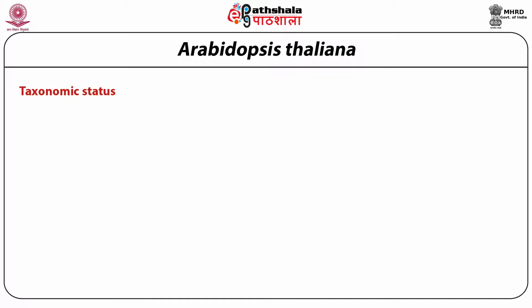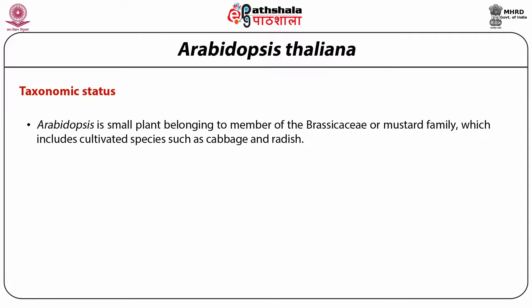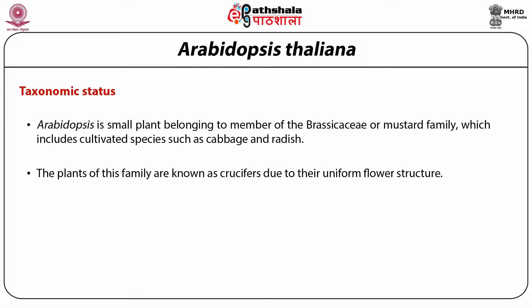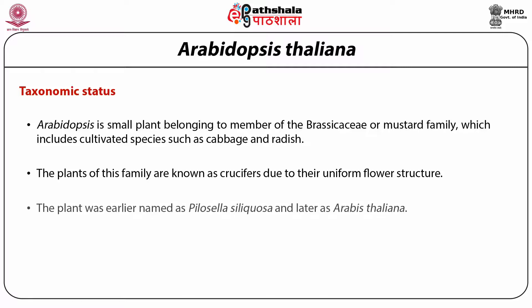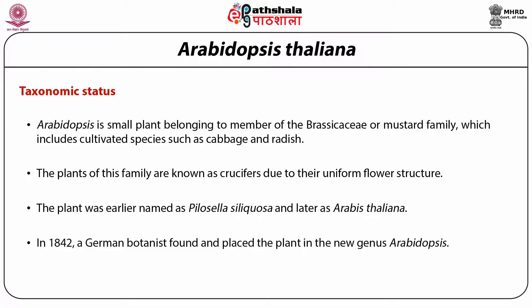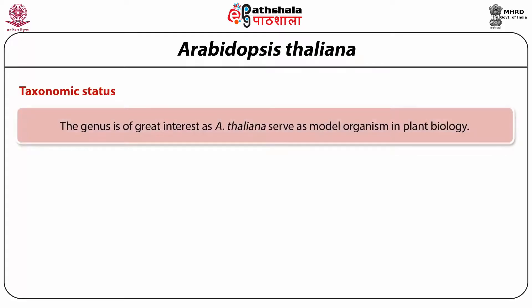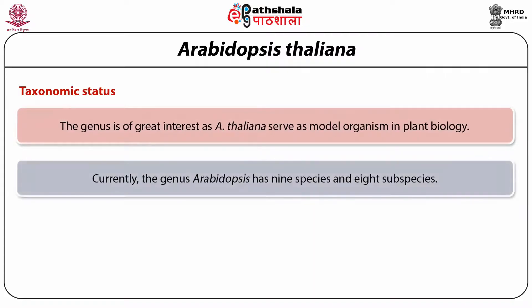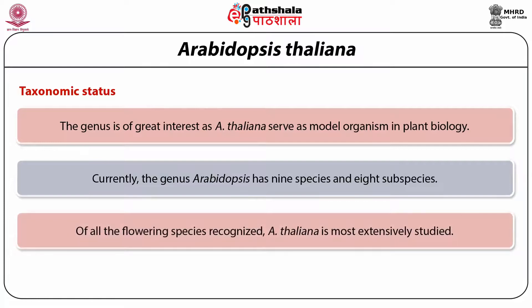Arabidopsis belongs to the Brassicaceae or mustard family, which includes cultivated species such as cabbage and radish; plants of this family are called crucifers due to their uniform flower structure. The plant was earlier named Pylosella silicosa and later Arabis thaliana. In 1842 a German botanist placed the plant in the new genus Arabidopsis. Currently the genus Arabidopsis has nine species and eight subspecies, of which A. thaliana is the most extensively studied flowering species.